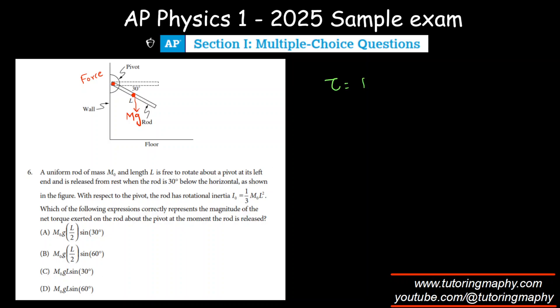Recall the formula for torque: τ = rF sin θ, where r is the distance from the point of action to the pivot, F is the force, and θ is the angle between these two.